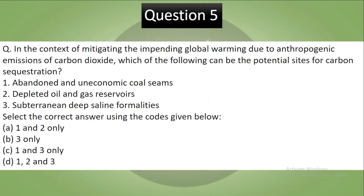Question 5: In the context of mitigating impending global warming due to anthropogenic emissions of carbon dioxide, which of the following can be potential sites for carbon sequestration? Statement 1: Abandoned and uneconomic coal seams. Statement 2: Depleted oil and gas reservoirs. Statement 3: Subterranean deep saline formations. Select the correct answer using the codes given below. Pause the video and try to answer.